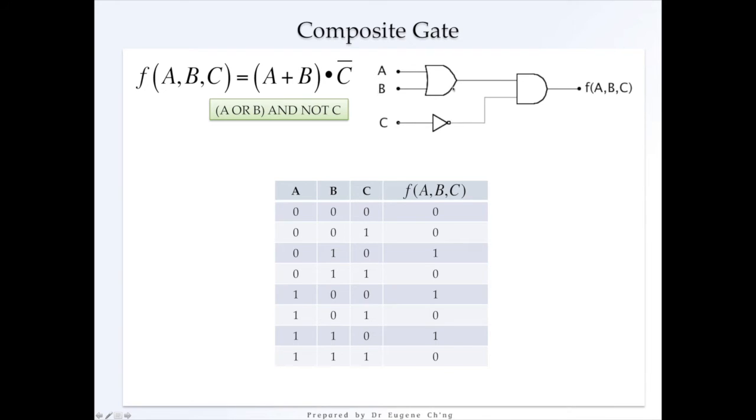And the output is constructed by pushing through the binary digits through the logic gates. And you get the output and you fill it in. So this is composite gate. And this is the truth table of the behavior of the composite gate.